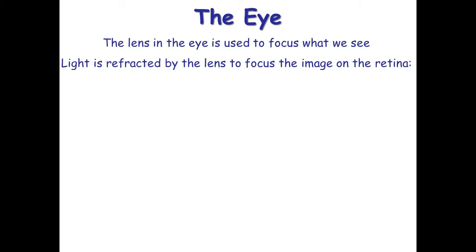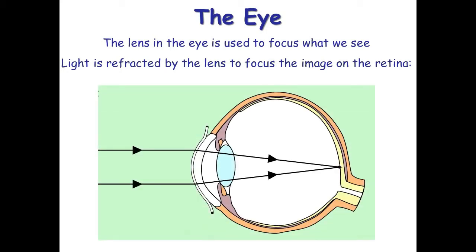Refraction is used in the human eye. The eye has a lens and refraction occurs in both the cornea and the lens itself. Rays of light are refracted and focused onto the back of the eye — the retina — forming a real image, which then sends a signal to the brain.